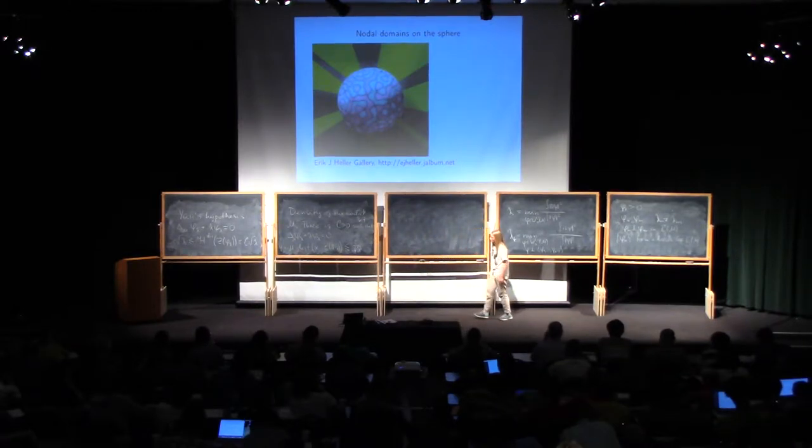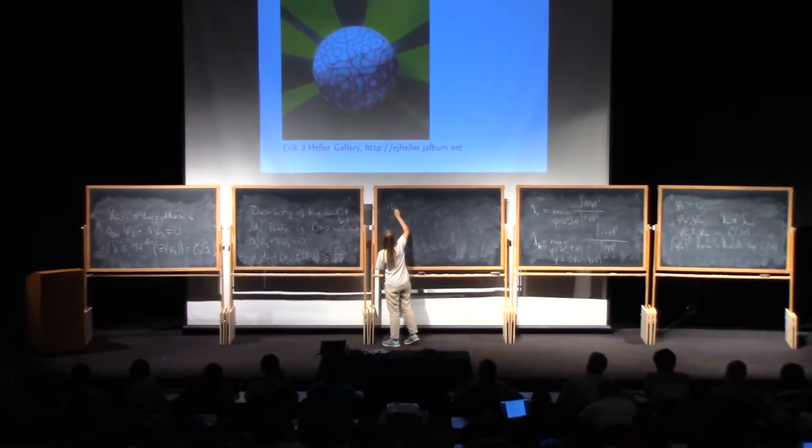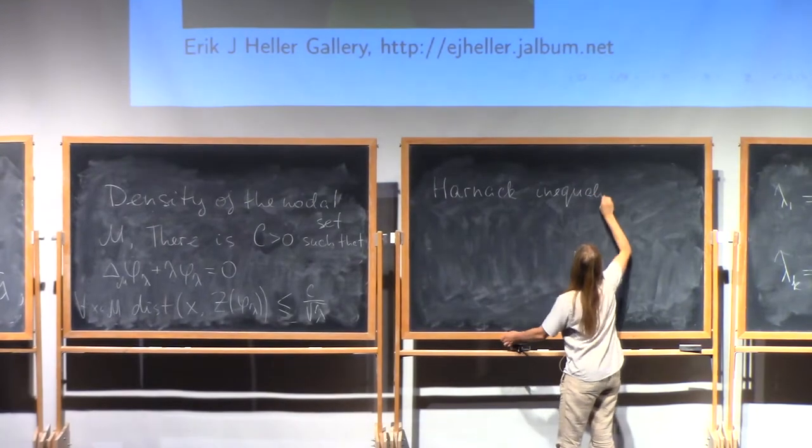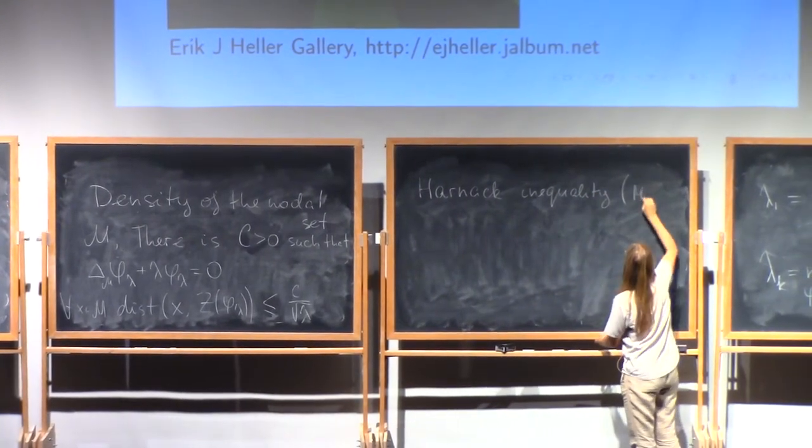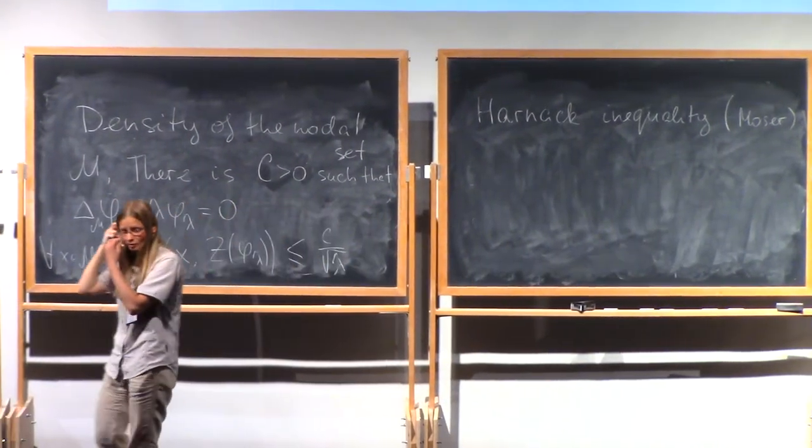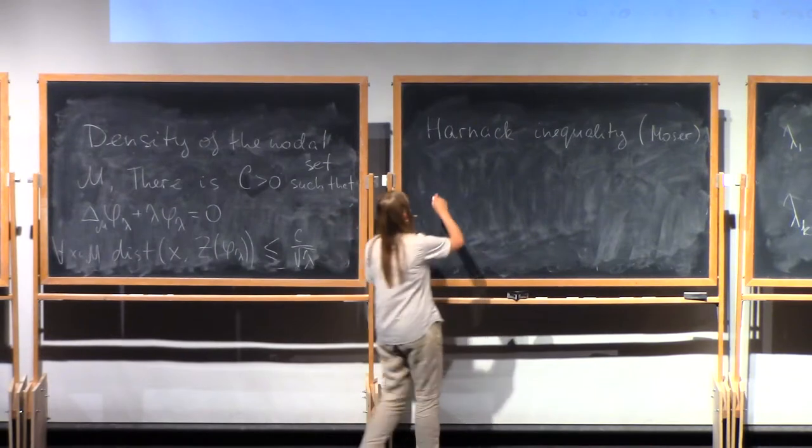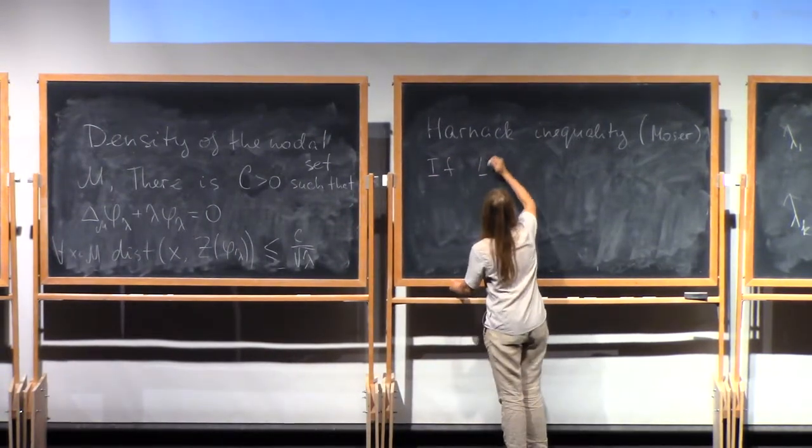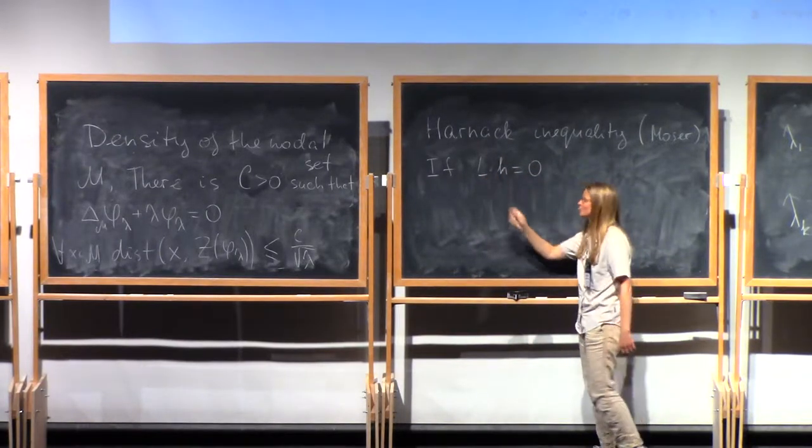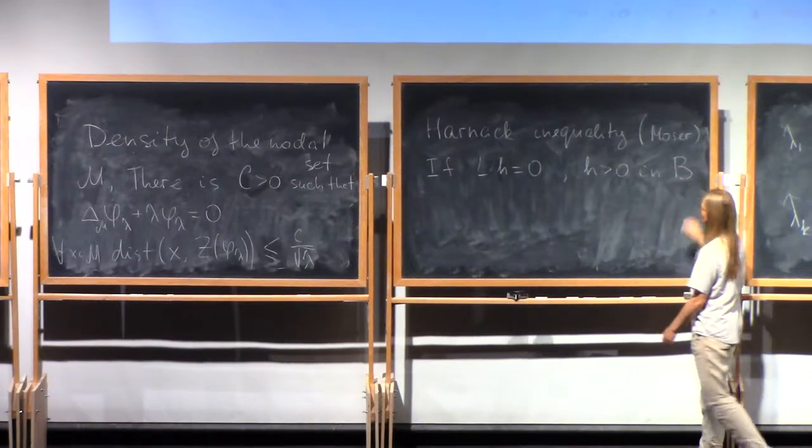There's one classical result on elliptic PDE that we'll need to prove this, it's Harnack inequality. That probably should be called Moser's inequality for elliptic PDEs, it was known to Harnack for harmonic functions.